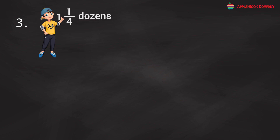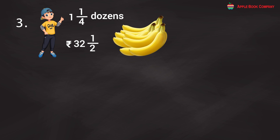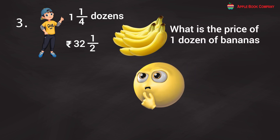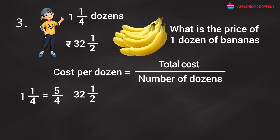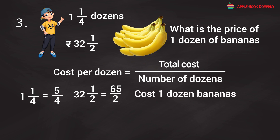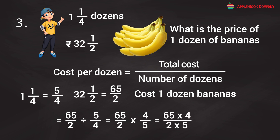Problem 3: Harshit bought 1 and 1/4 dozens of bananas for Rs. 32 and 1/2. What is the price of 1 dozen? Number of dozens = 5/4; total cost = 65/2. Price of 1 dozen = 65/2 ÷ 5/4 = 65/2 × 4/5 = 260/10 = Rs. 26. Therefore, the price of 1 dozen bananas is Rs. 26.